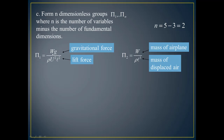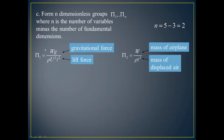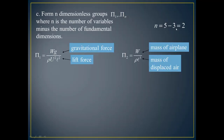Pi 1 is mass times G — weight — and gravitational force divided by lift force rho U squared L squared. This is a 5-term relation. The non-dimensional number here is mass of the aeroplane divided by mass of displaced fluid. So Pi 1, Pi 2 ... Pi n are non-dimensional numbers. With 5 variables and n equals 3 fundamental dimensions, the total number of non-dimensional numbers or Buckingham Pi variables is 5 minus 3, which equals 2.